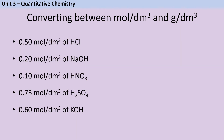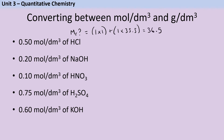Time for some practice. We'll do the first one together and then you can pause the video for the others. For hydrochloric acid, Mr = (1×1) + (1×35.5) = 36.5. To convert 0.5 mol/dm³ to g/dm³ we multiply by 36.5: 0.5 × 36.5 = 18.25 g/dm³.